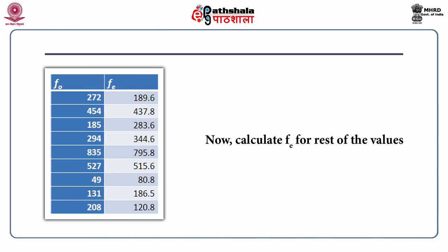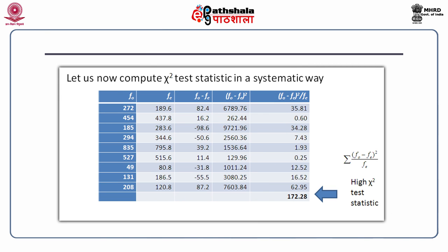Now let us compute the chi-square test statistic systematically. First we have FO — the observed frequencies. Second, we just calculated FE — the expected frequencies. Third, compute FO minus FE. Fourth, square it — that is (FO minus FE) squared. Finally, compute (FO minus FE) squared divided by FE, and take the summation of all those values. You get the chi-square test statistic of 172.28 for this data.